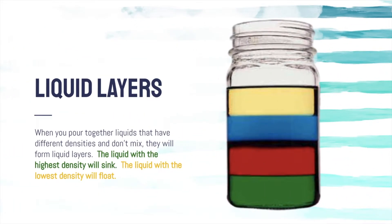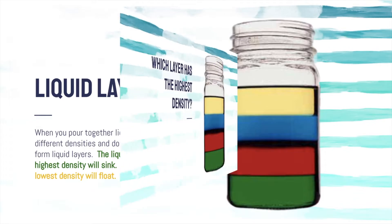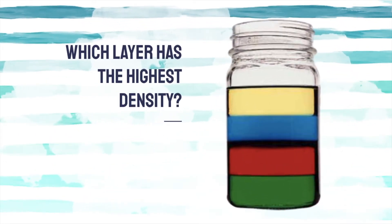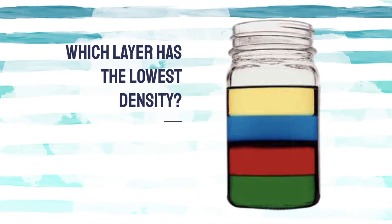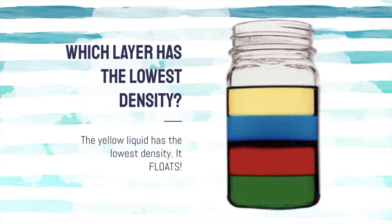Did you know that liquids sink and float too? When you pour together liquids that have different densities and don't mix, they will form liquid layers. The liquid with the highest density will sink. The liquid with the lowest density will float. The green liquid has the highest density — it sinks. The yellow liquid has the lowest density — it floats.